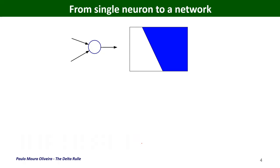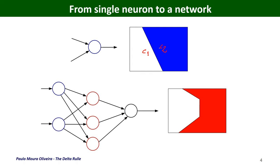This is a nice representation: with a single neuron we define a line, and this can classify two classes. Of course, with a neural network we can have more than one line — in this case, three lines — so it is possible to have more complex patterns and classifications with a neural network. And that's the objective of this video.